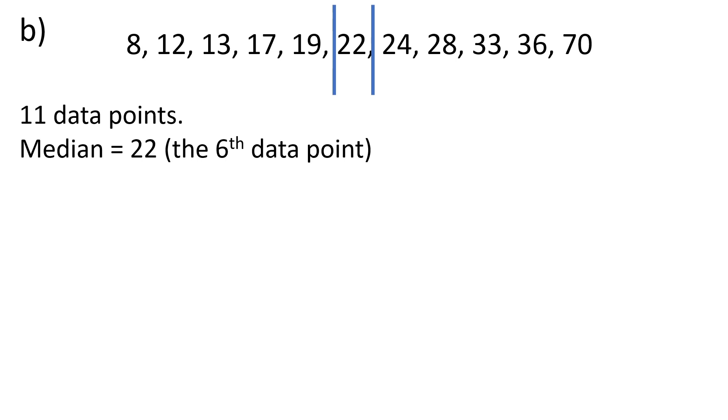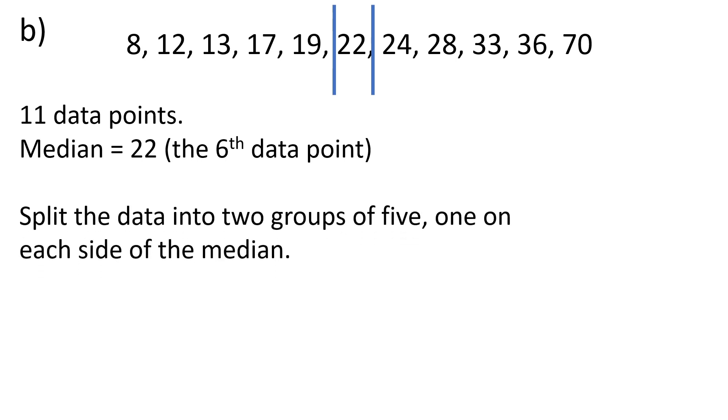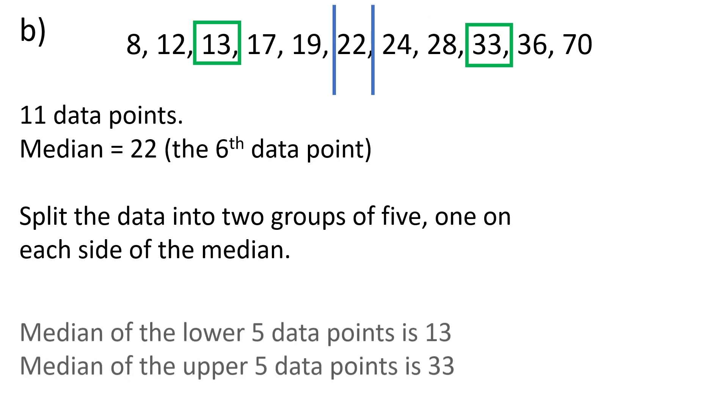The median of the lower half—again, the lower half has five data points—is the middle point, 13. The median of the upper half is the middle point, 33, and that gives us our five number summary.